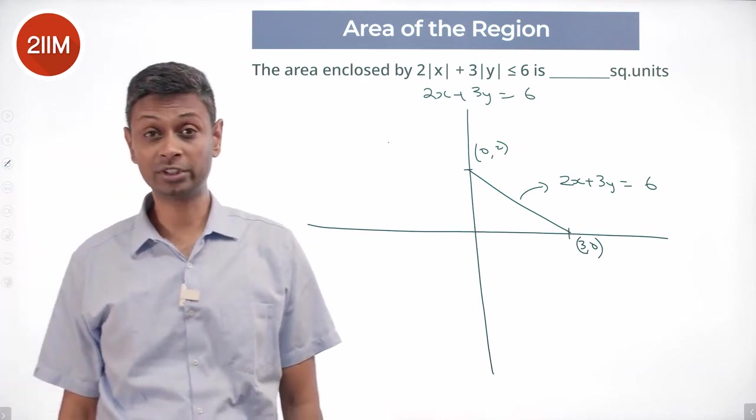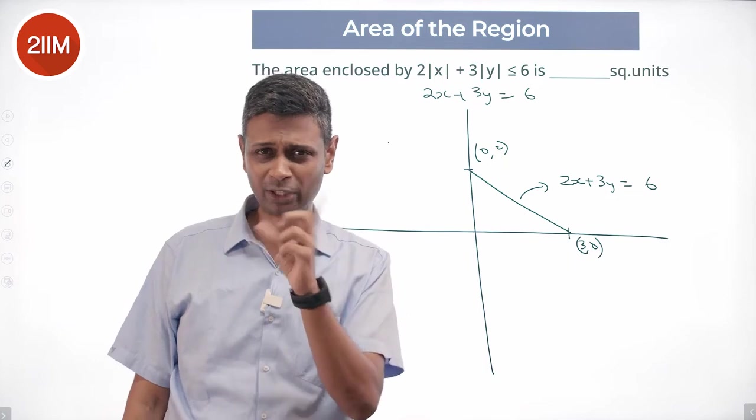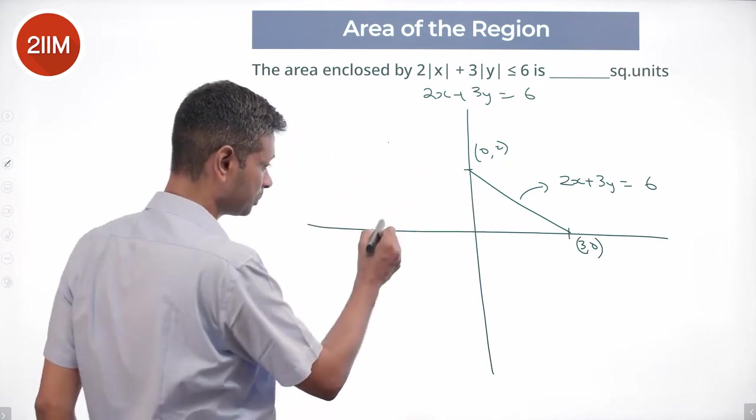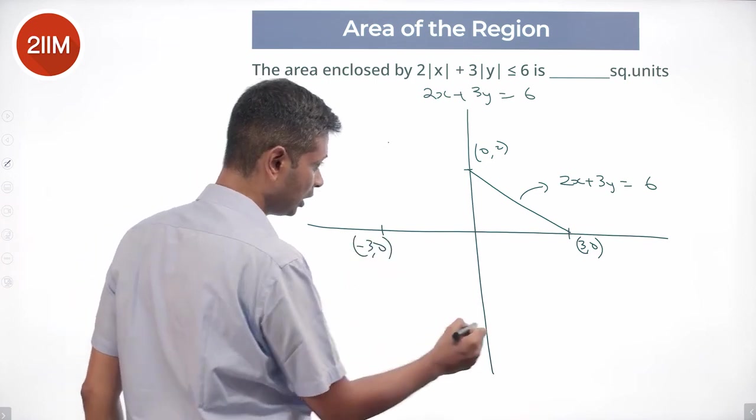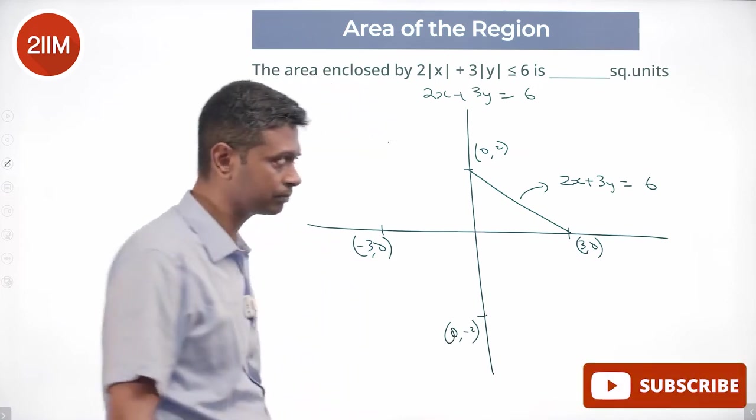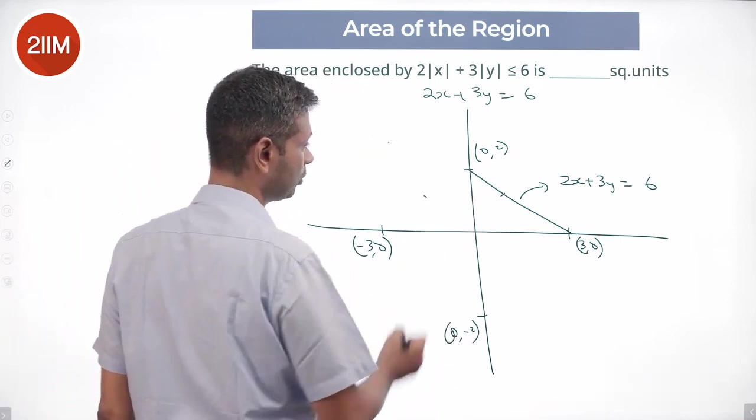But this is 2x plus 3y equals 6. I'm dealing with modulus, so plus and minus both will work. So if I put x is minus 3 also, it should work. If we put 0 comma minus 2 also, it should work.